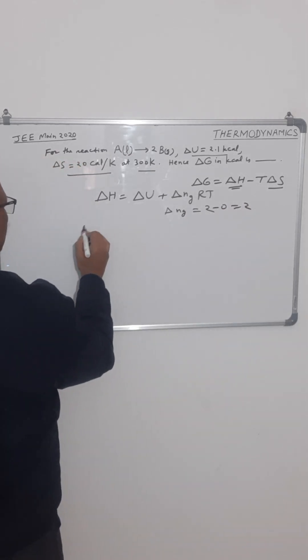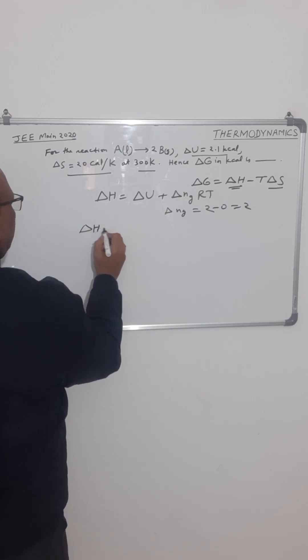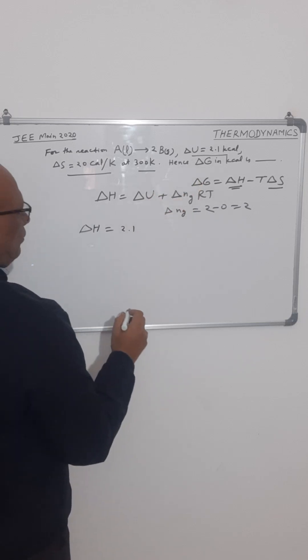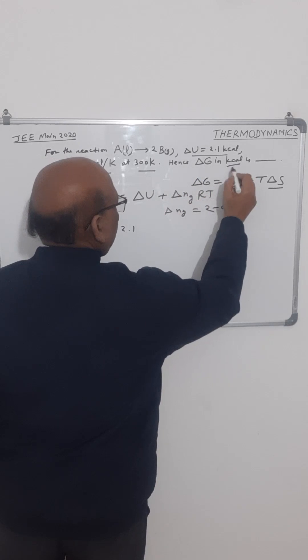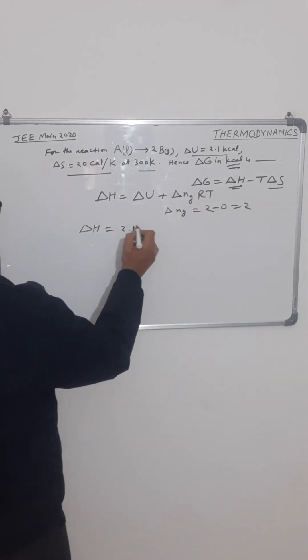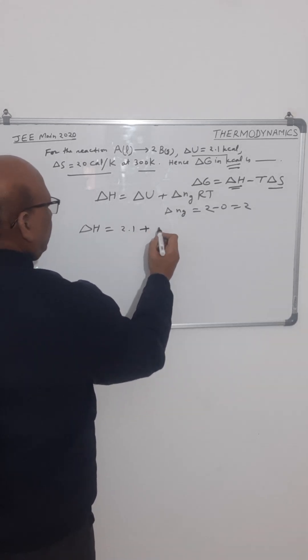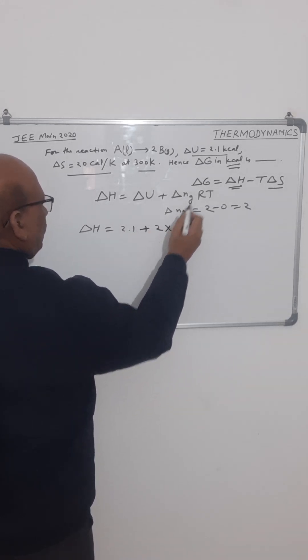Now we can find out the value of delta H. Delta H is delta U, delta U is 2.1. We will keep in kilocalorie because our answer is to be found in kilocalorie. So delta U is 2.1 kilocalorie plus delta NG is 2 into value of R.